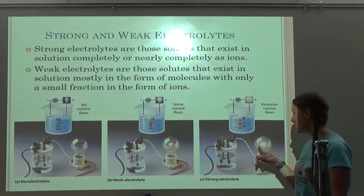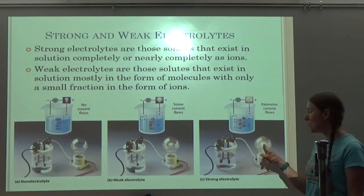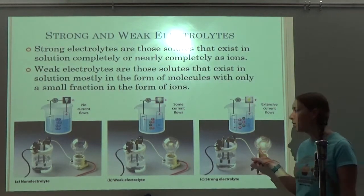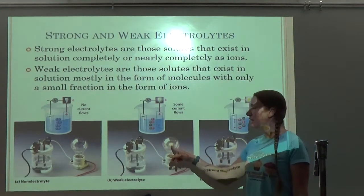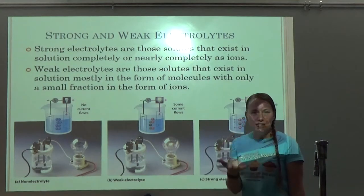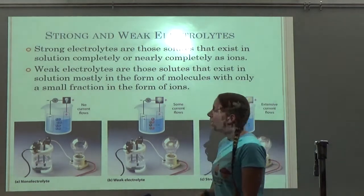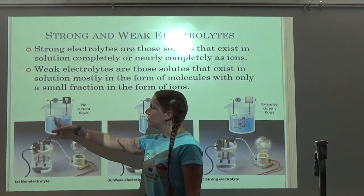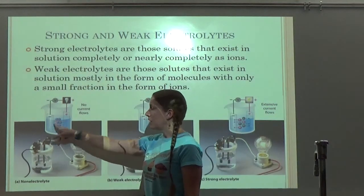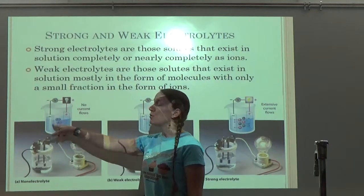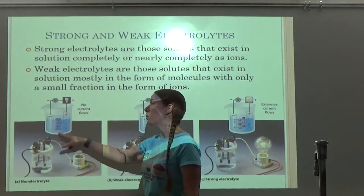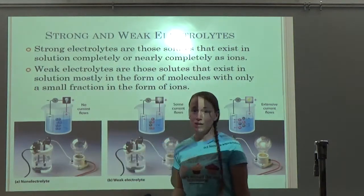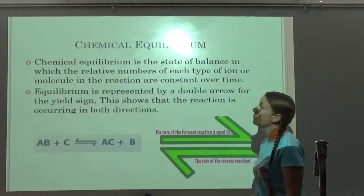If it was attached to a light bulb, a strong electrolyte might fully light the bulb, whereas a weak electrolyte will only dimly light it. A non-electrolyte — your molecular compounds — they remain as neutral molecules, don't break into ions, and so there will be no electric current.